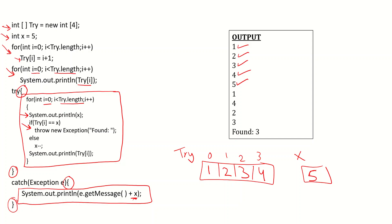The second statement checks: if arr[i] equals x, where i is currently 0. We check the element at location 0, which is 1 — is it equal to x, which is 5? It is not, so we go to the else. In the else, x minus minus, so x becomes 4. Then we output arr[i], which is arr[0] equals 1. So far we completed one iteration of the for loop.